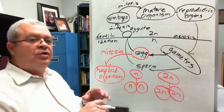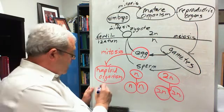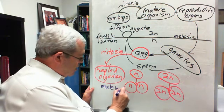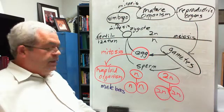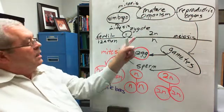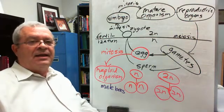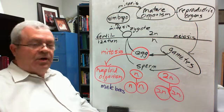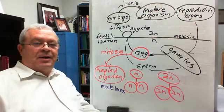Well, there's a number that I could choose, but I'm going to pick one I particularly enjoy, and that is male bees. Male bees, not female bees. Female bees are diploid, but male bees - every cell in a male bee's body is haploid. And so they develop by parthenogenesis. Male bees do.